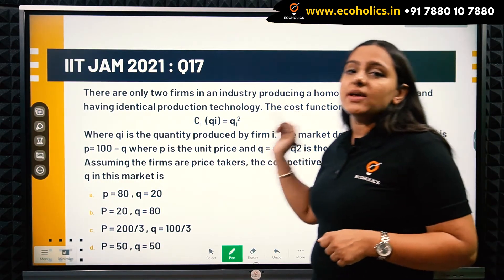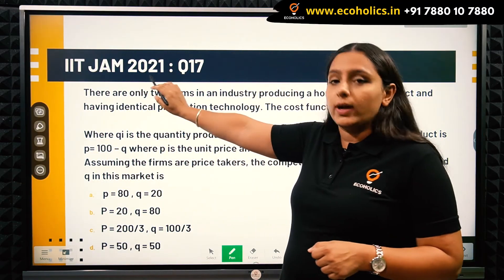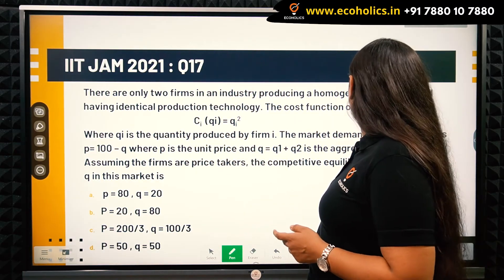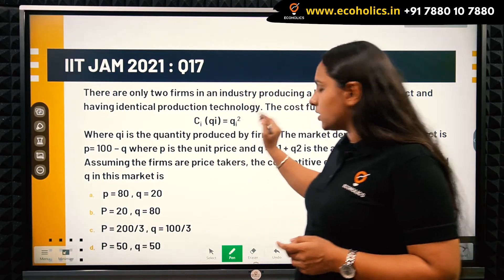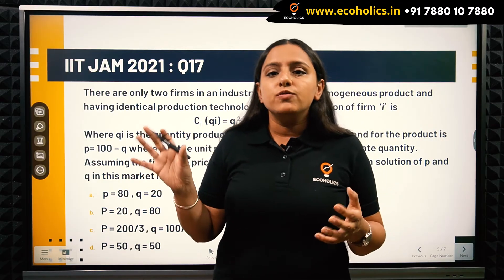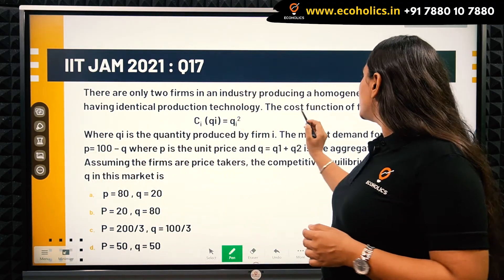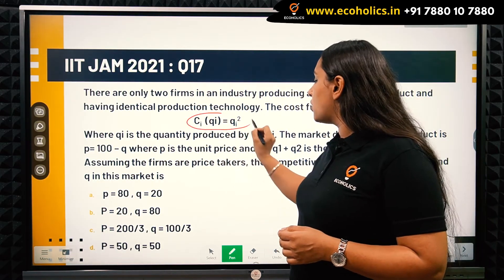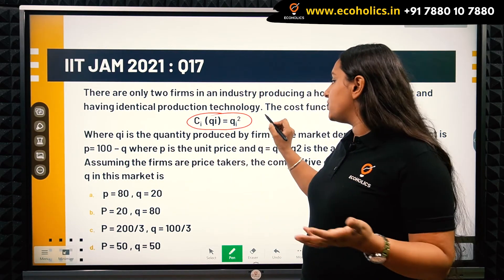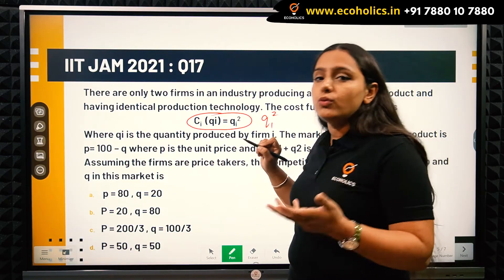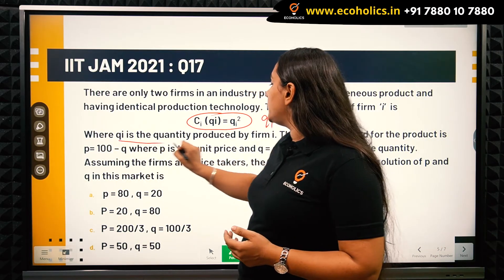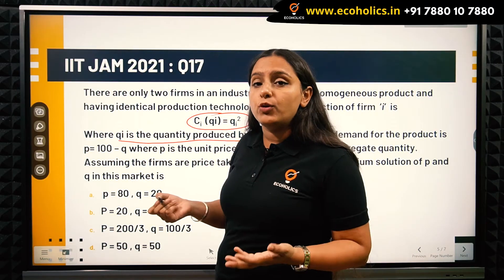This is question number 17 from the IIT JAM Economics 2021 paper. It says there are only two firms in an industry producing a homogeneous product with identical production technology. The cost function of firm i is qi squared — so firm 1 has cost q1², and firm 2 has cost q2², where qi is the quantity produced by firm i.